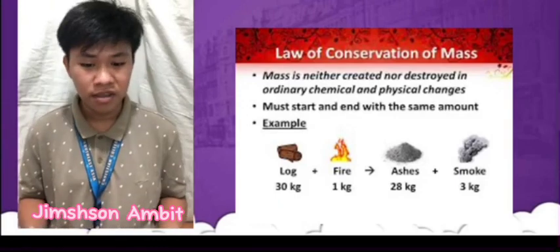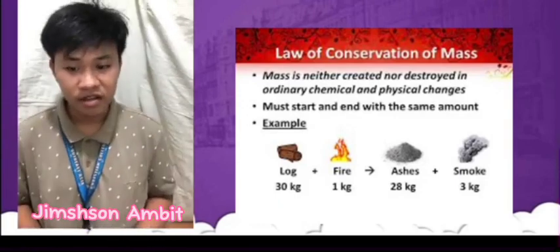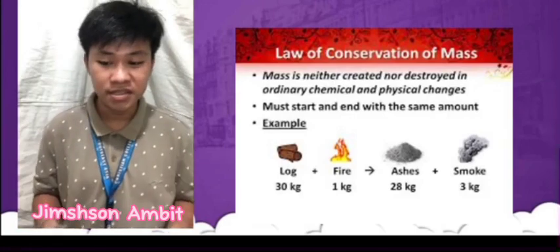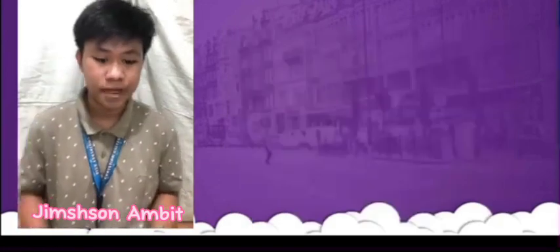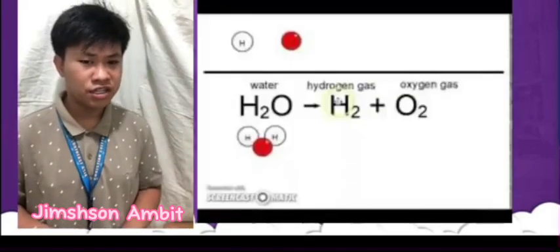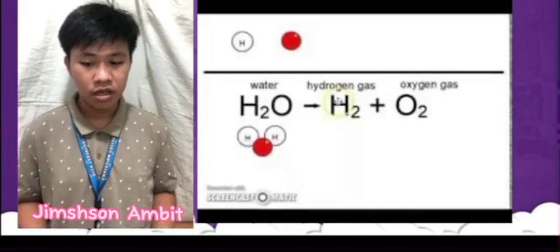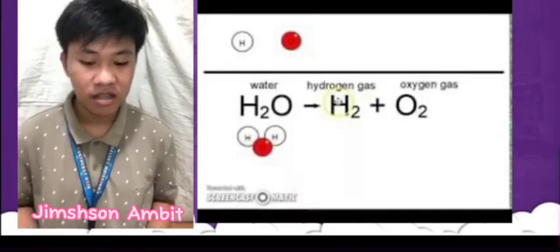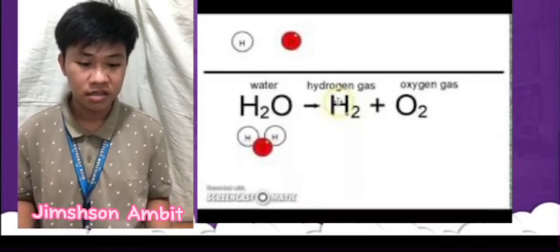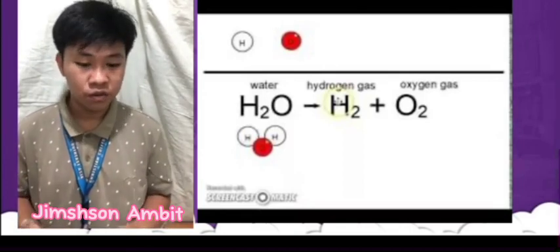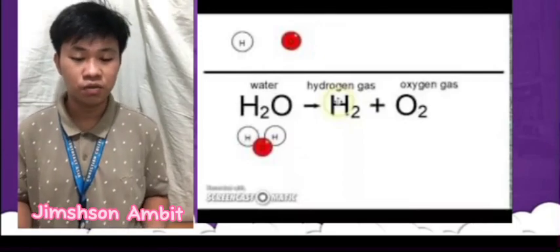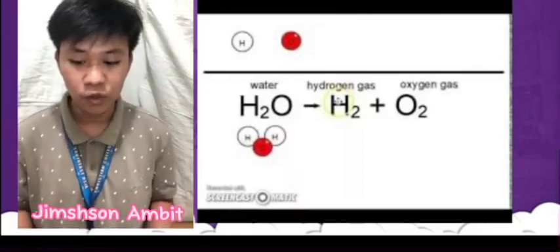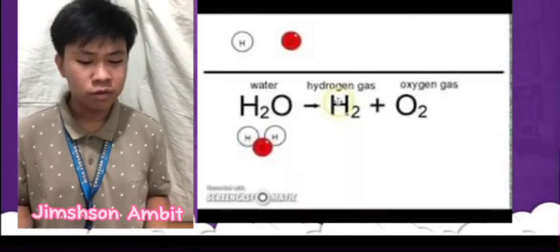We can use this law to write a mass balance equation for a chemical reaction. A mass balance equation shows how the mass of the reactants and products are related. For example, let's consider the reaction of hydrogen and oxygen to form water. The balanced chemical equation for this reaction is 2H2 + O2 = 2H2O. This tells us that 2 moles of hydrogen gas react with 1 mole of oxygen gas to form 2 moles of water vapor.